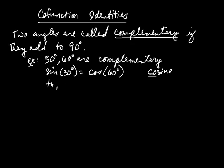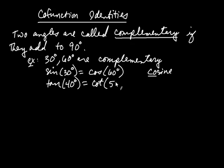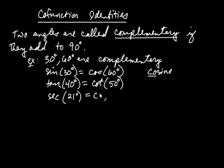For example, tangent of 40 degrees equals cotangent of 50 degrees, since 40 and 50 add to 90. You can also verify that secant of 21 degrees equals cosecant of 69 degrees, since those two angles also add to 90 degrees.